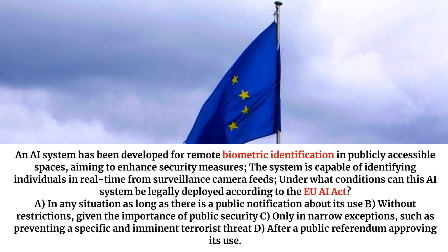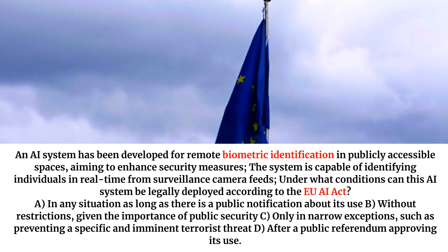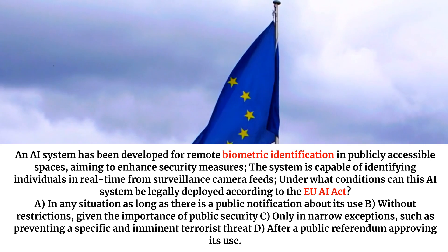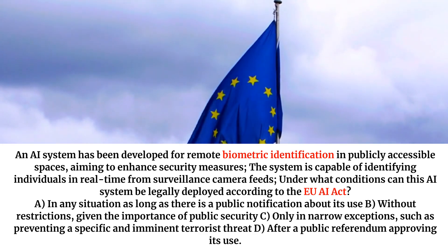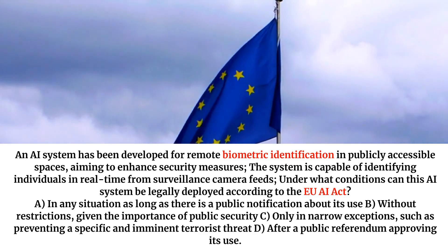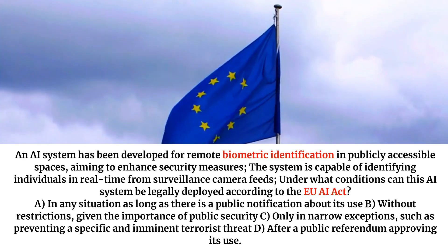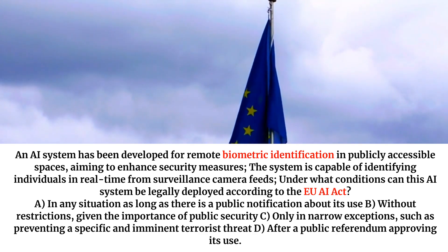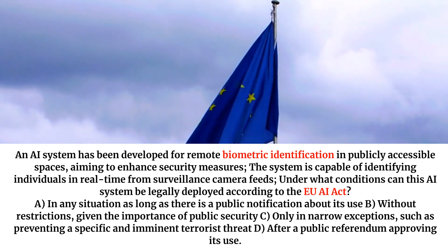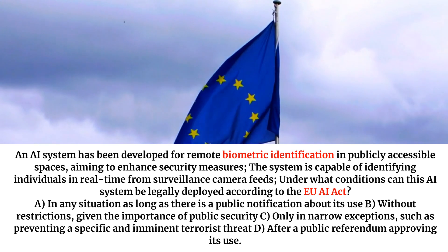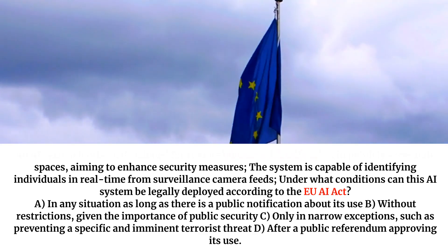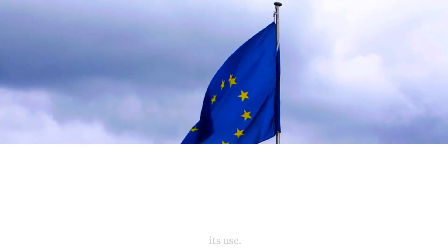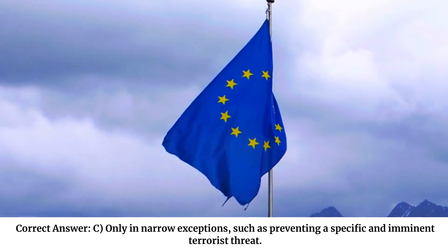An AI system has been developed for remote biometric identification in publicly accessible spaces, aiming to enhance security measures. The system is capable of identifying individuals in real-time from surveillance camera feeds. Under what conditions can this AI system be legally deployed according to the EU AI Act? A. In any situation as long as there is a public notification about its use. B. Without restrictions, given the importance of public security. C. Only in narrow exceptions, such as preventing a specific and imminent terrorist threat. D. After a public referendum approving its use. Correct answer: C. Only in narrow exceptions, such as preventing a specific and imminent terrorist threat.